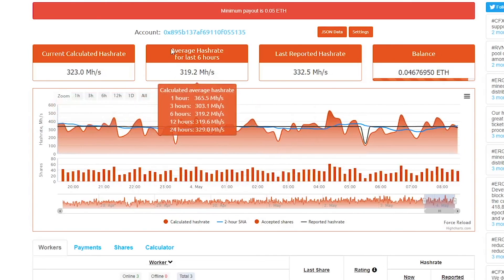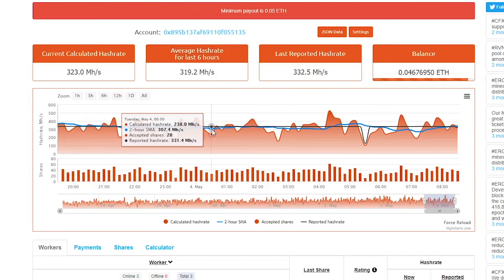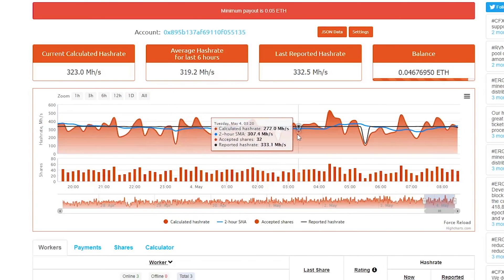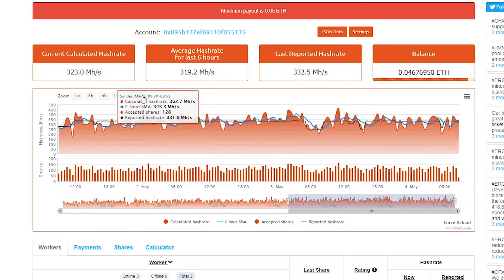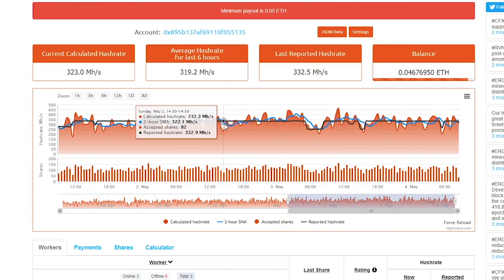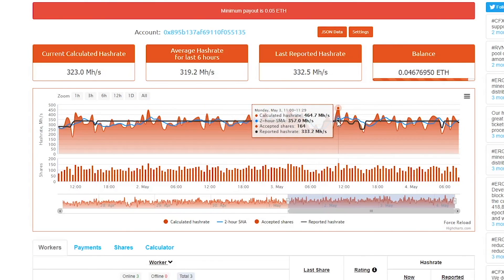But on average, it creates this average hash rate for the last six hours. So that's this blue line, and this blue line should match the last reported hash rate, which is the black line. And as you can see, it basically does. It goes up and down, but on average, even these dips right here, they still roughly meet the black line.